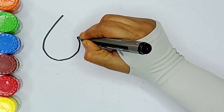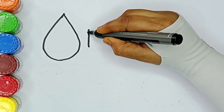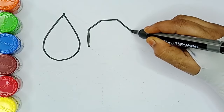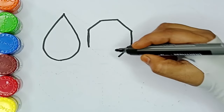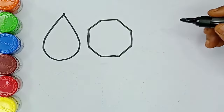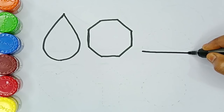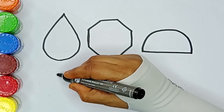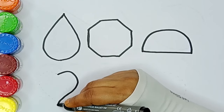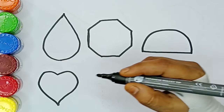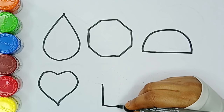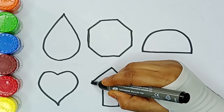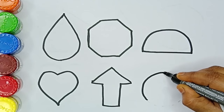Drop. Octagon. Semi-circle. Heart. Arrow. Circle.